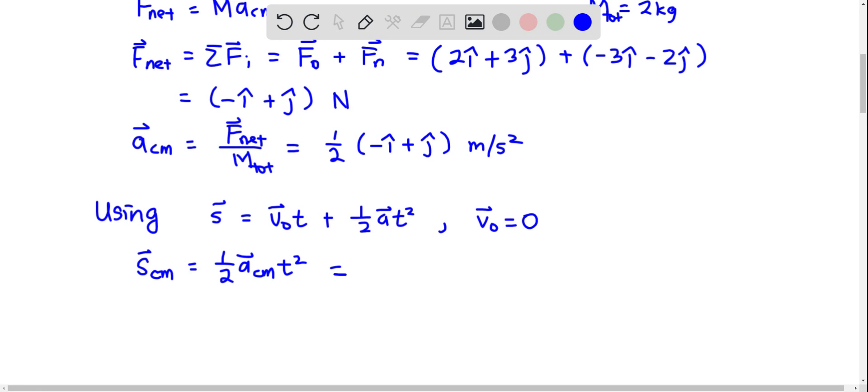And T is 4 seconds. We substitute the A_CM and then multiply by 4 squared, and we get minus 4 i hat plus 4 j hat meters.